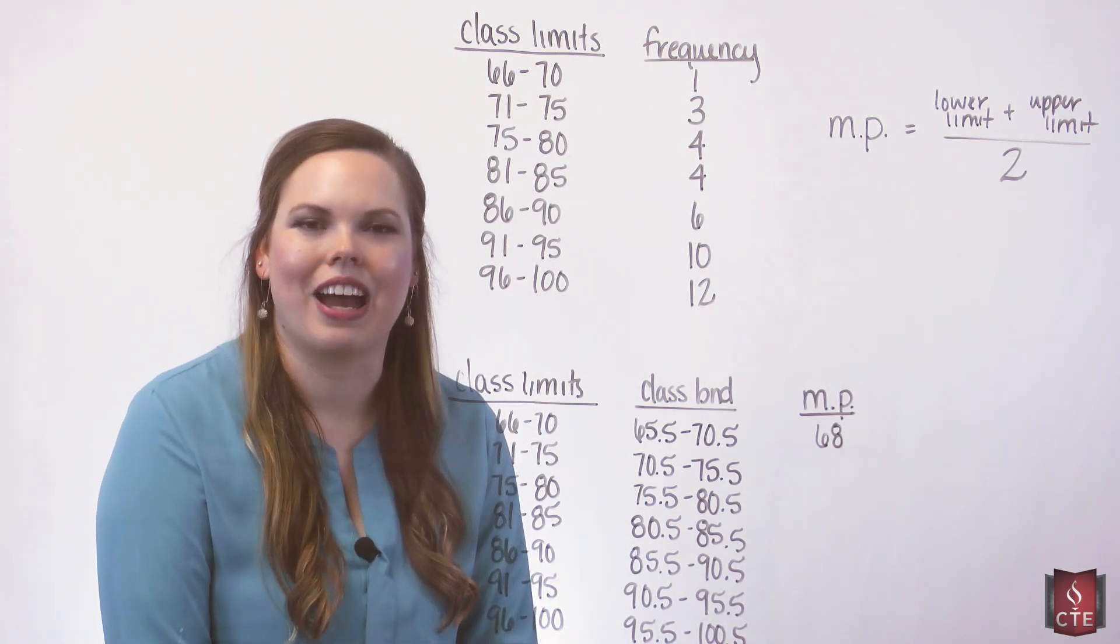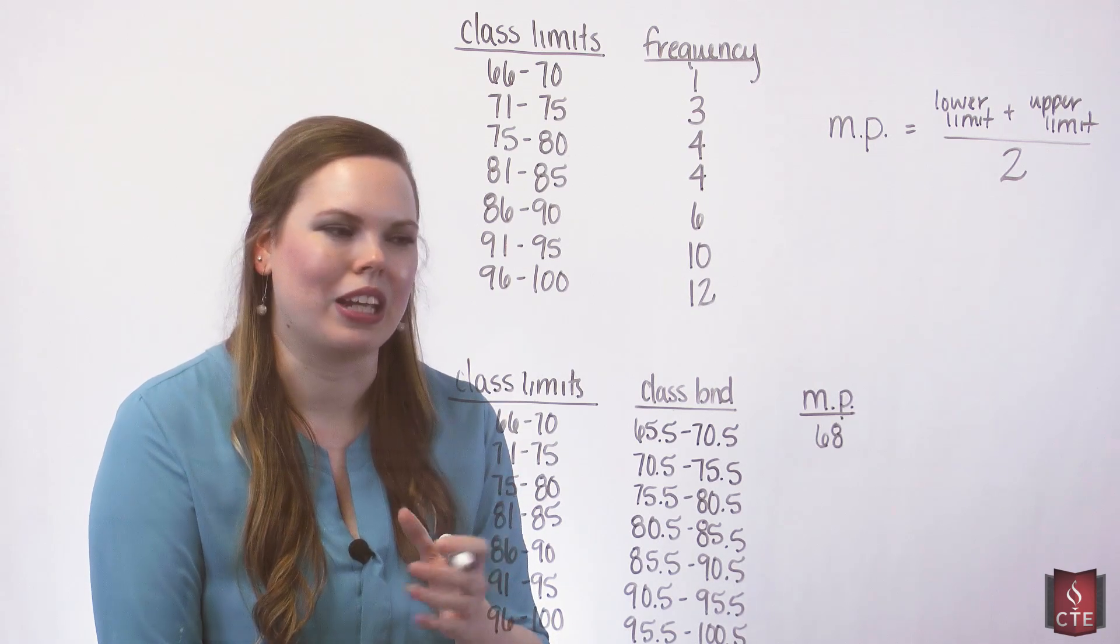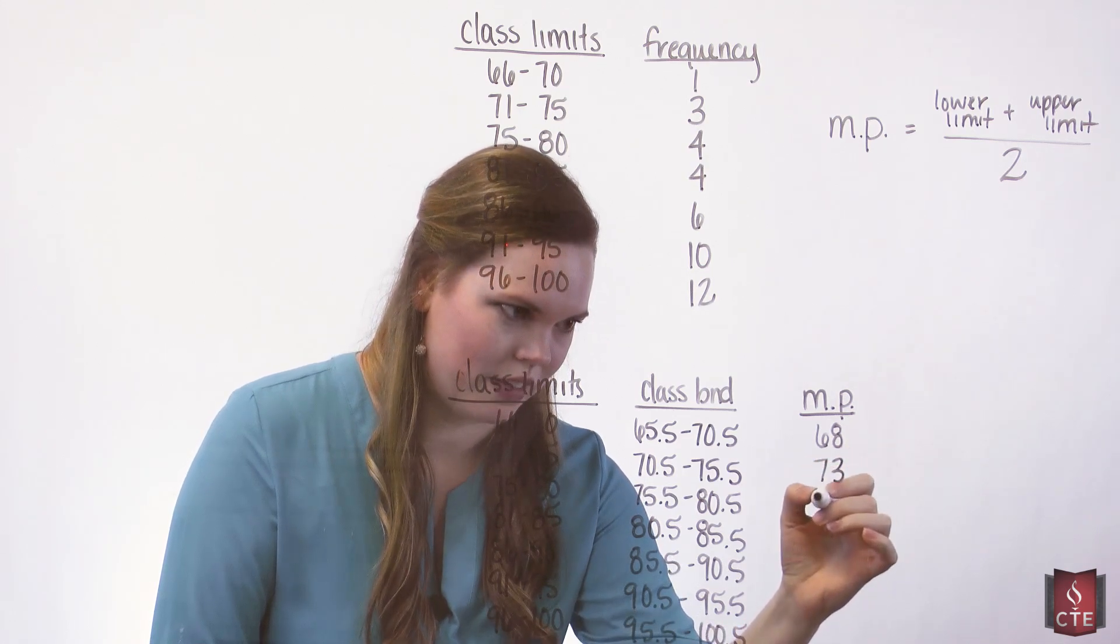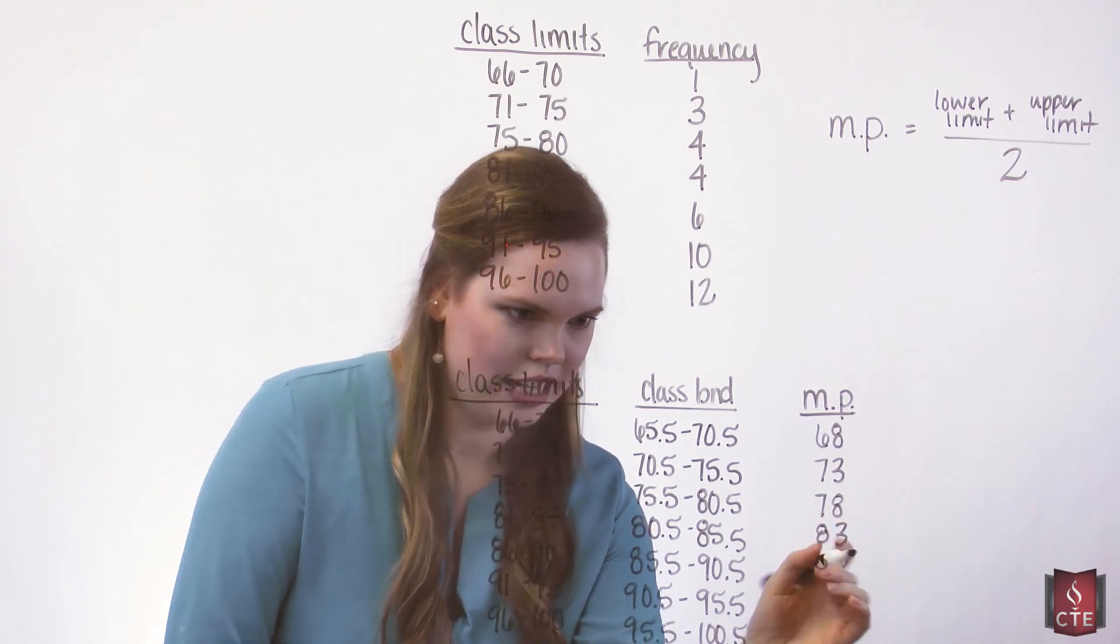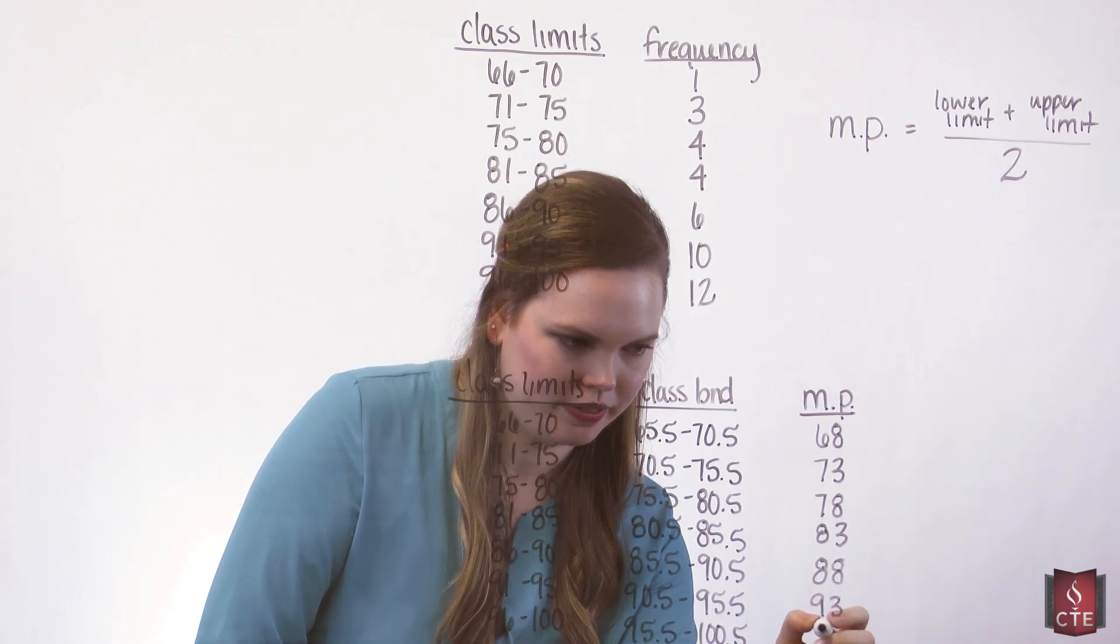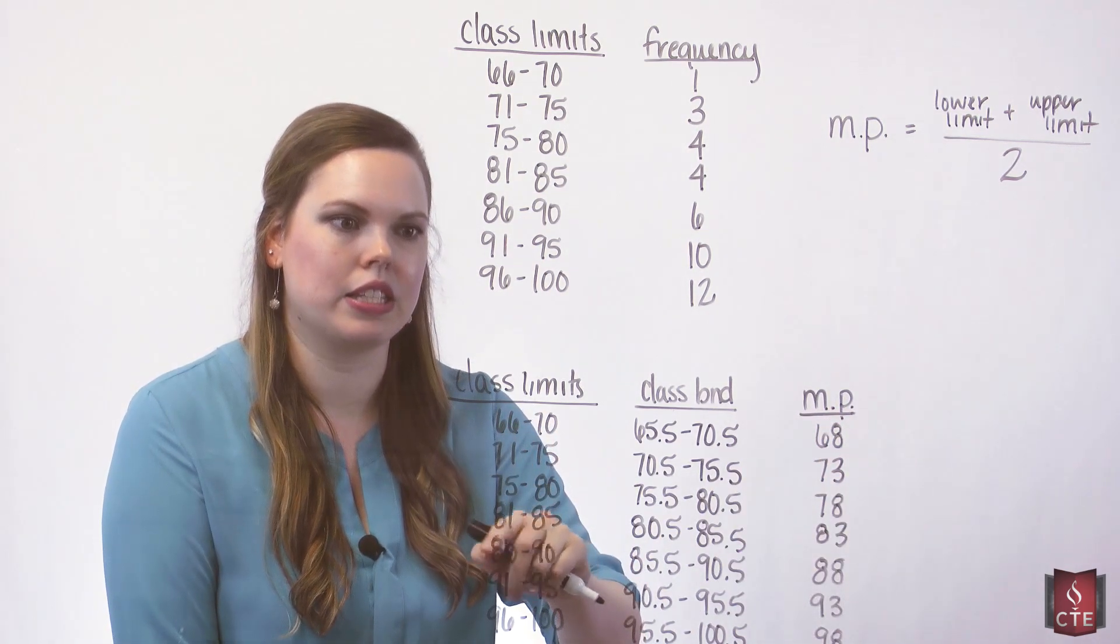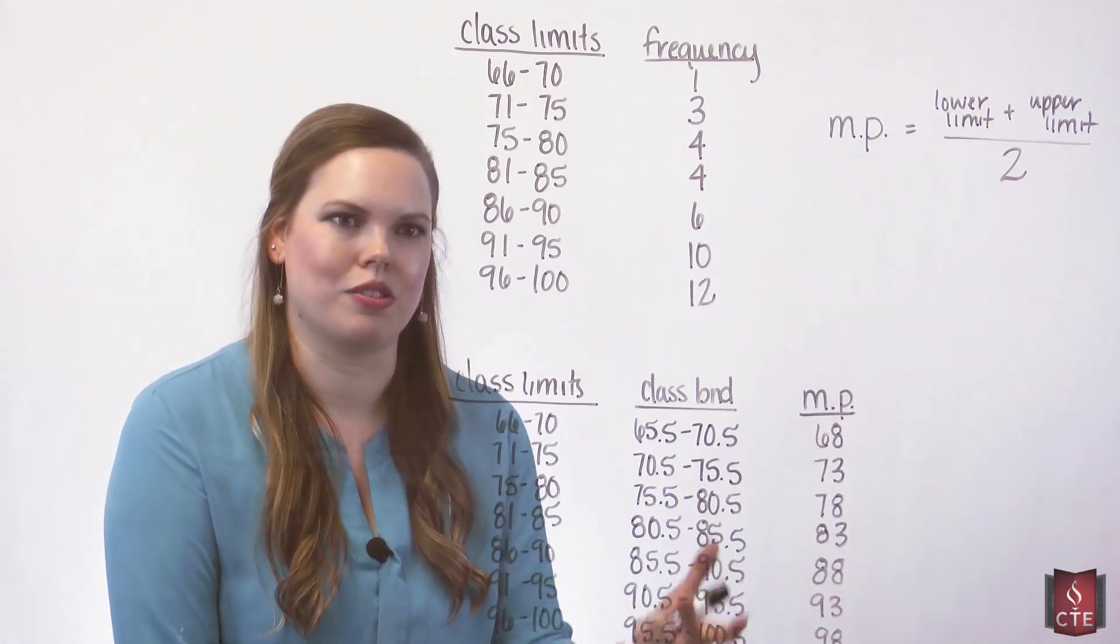Right in the middle of that class used for a frequency polygon, but other things as well. You can use this for a mean of a frequency distribution if you ever did that as well. So we go on and find the midpoint of the next class. It's going to be 73. This one's going to be 78. And your class midpoints should also have the same difference between them as your class limits, which is 5. The difference here should also be 5.